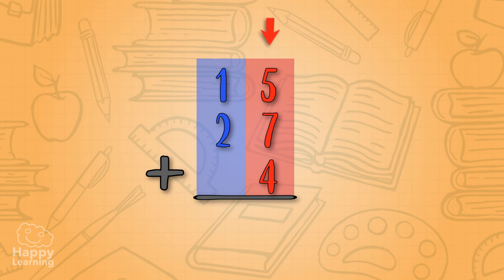Now we add the ones! Five plus seven equals twelve! Plus four equals sixteen! With the number sixteen, six represents ones, and one represents tens! Because there are no more units to add, we put number six by the result!